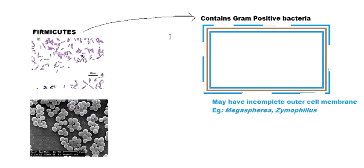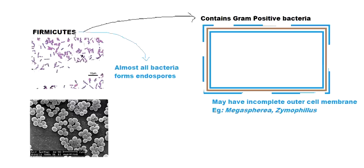Examples of bacteria having this incomplete outer cell membrane include Megasphaera and Zymophilus, as you can see. Another feature of this phylum can be found from the word itself — 'Firmicutes' — where 'firm' means tough, resistant, or strong, and 'cutis' means skin. So combining that, we get something with a strong tough skin, which refers to endospores. Many or almost all bacteria in this phylum have the ability to form endospores.